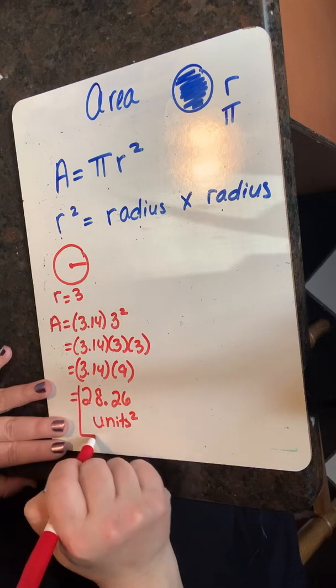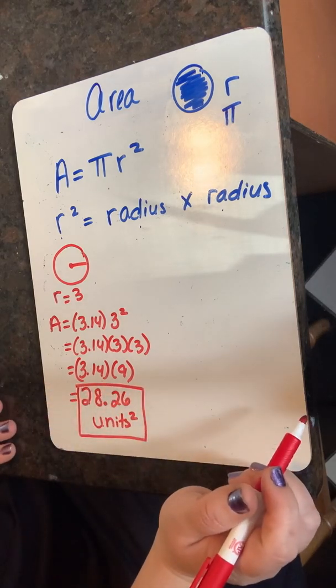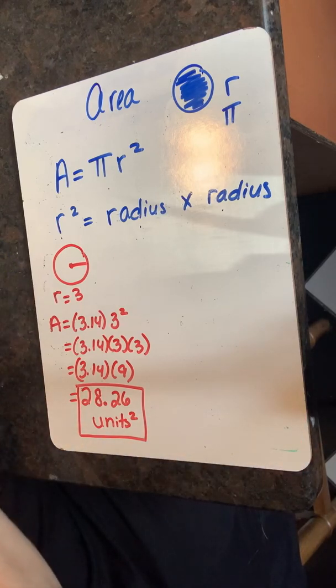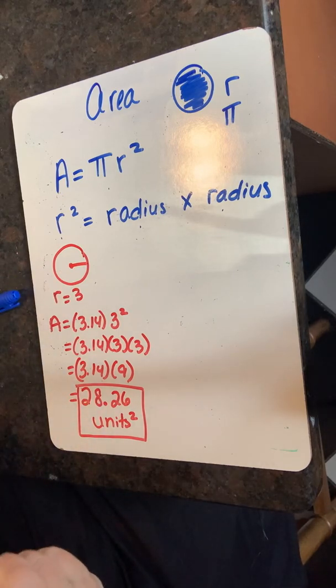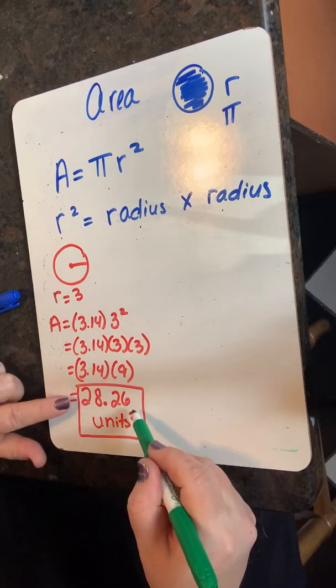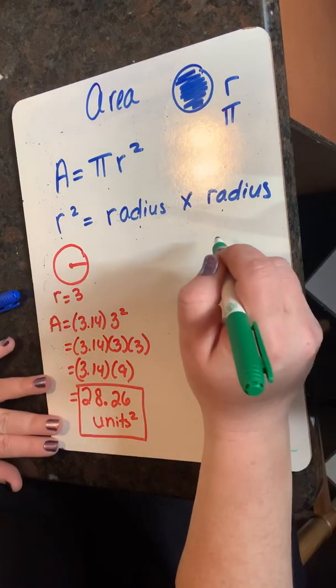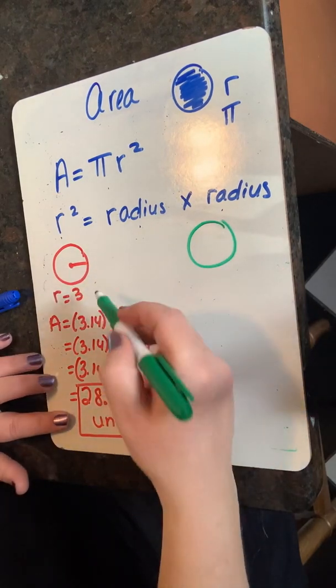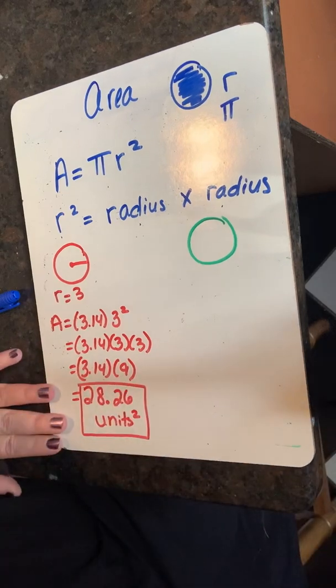Our label for area is units squared. Nuestra etiqueta para el área es unidades al cuadrado. So the area of a circle with radius three is 28.26 units squared. Entonces, el área de un círculo con radio tres es veintiocho y veinte sobre seiscientos unidades al cuadrado.